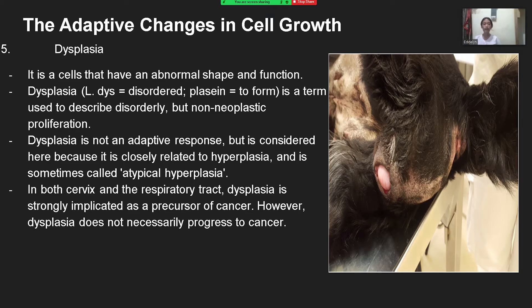In both the cervix and the respiratory tract, dysplasia is strongly implicated as a precursor of cancer. However, dysplasia does not necessarily progress to cancer. Dysplasia is the alteration of size, shape, and organization of cells. There is low-grade to high-grade dysplasia, and importantly, dysplasia is premalignant.